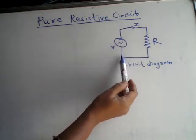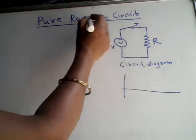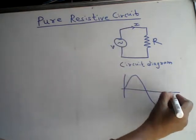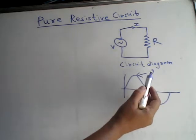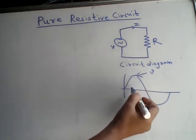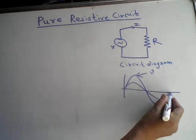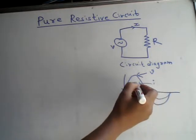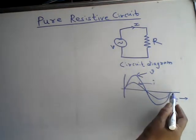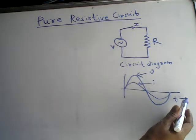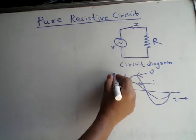Let the current flowing through the circuit be represented by I. If we see the waveforms of this pure resistive circuit, the voltage waveform is represented by small v, indicating instantaneous voltage which has different values at any instant. The current waveform is plotted similarly, with time along the X axis and amplitudes of current and voltage along the Y axis.